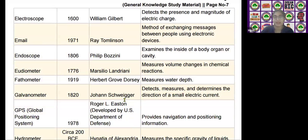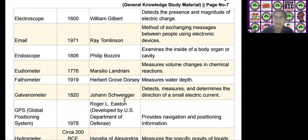The next scientific device is the electroscope, invented by William Gilbert in the year 1600. It is used to detect the presence and magnitude of an electric charge.